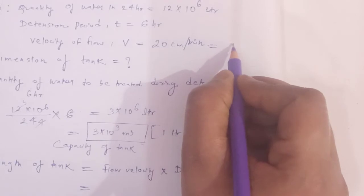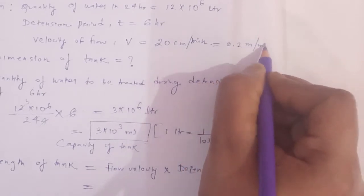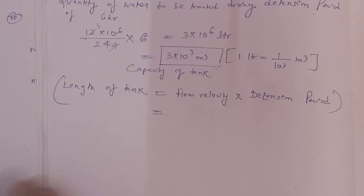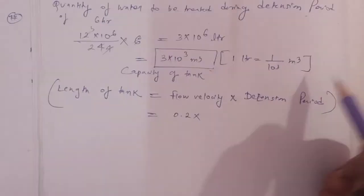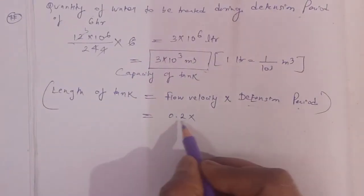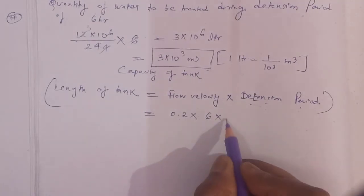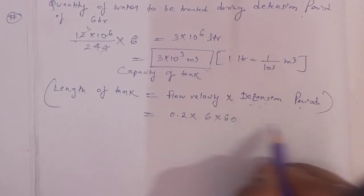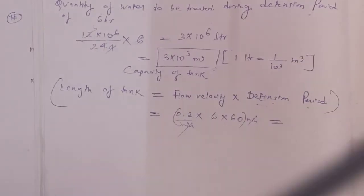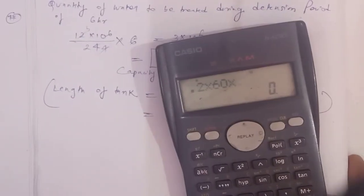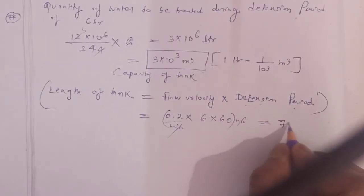The velocity is 0.2 meters per minute. The detention period is 6 hours, which equals 360 minutes. So the length of the tank equals velocity × detention time = 0.2 × 360 = 72 meters.